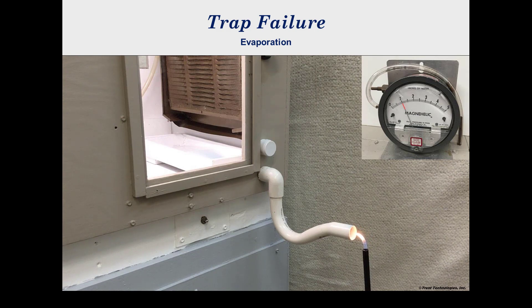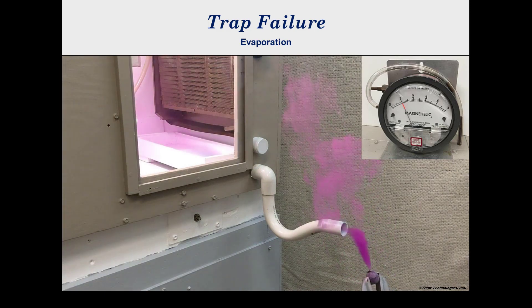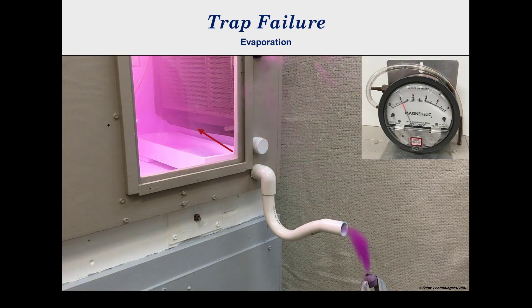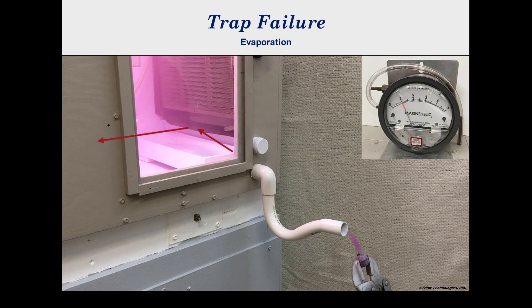Deflection of the benzene lighter flame shows how contaminated air can be drawn into the unit, and the introduction of smoke near the drain outlet shows how polluted air can be drawn into the system and spread into the conditioned space.